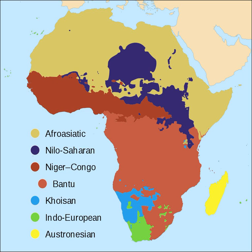Austronesian: Malagasy in Madagascar. Indo-European: Afrikaans. Niger-Congo: Chichewa in Malawi and Zimbabwe, Comorian in the Comoros, Kinyarwanda in Rwanda, Kirundi in Burundi, Sesotho in Lesotho, South Africa and Zimbabwe, Setswana in Botswana and South Africa, Shona and Sindebele in Zimbabwe, Sepedi in South Africa, Tshivenda in South Africa, Swahili in Tanzania, Kenya, Rwanda and Uganda, Swati in Eswatini and South Africa, Tsonga in South Africa, Tshivenda in South Africa, Xhosa in South Africa, Zulu in South Africa.